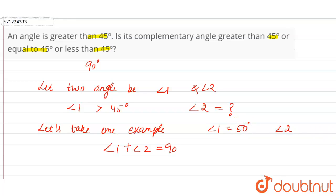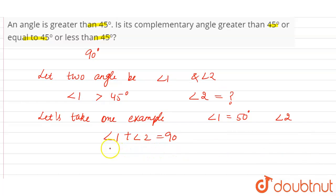So angle 1 is 50 degrees. We have to find angle 2, which is equal to 90 degrees minus 50 degrees. So 90 degrees minus 50 degrees is 40 degrees.